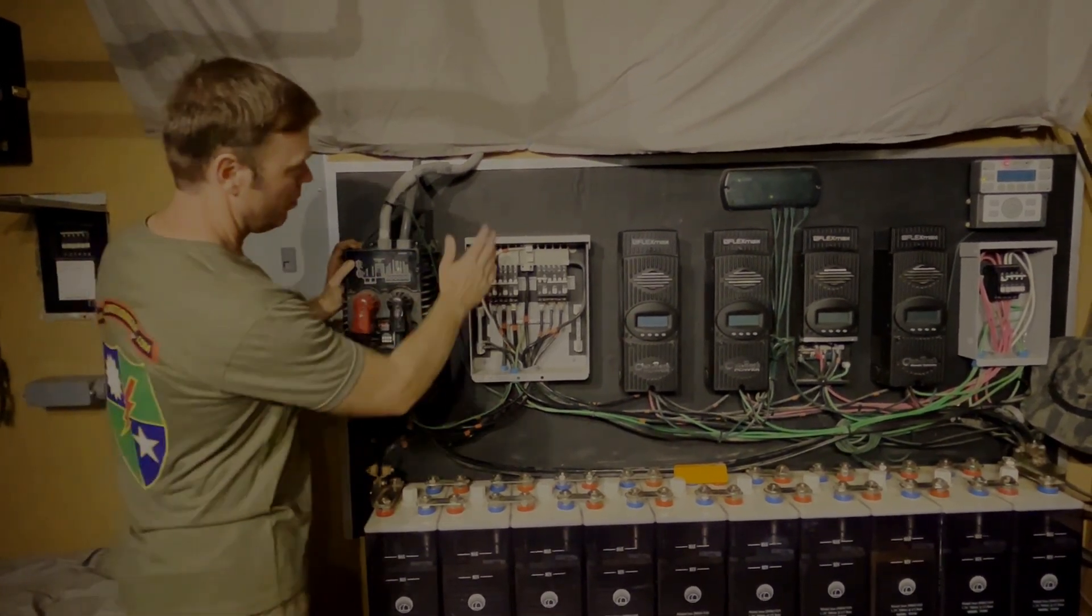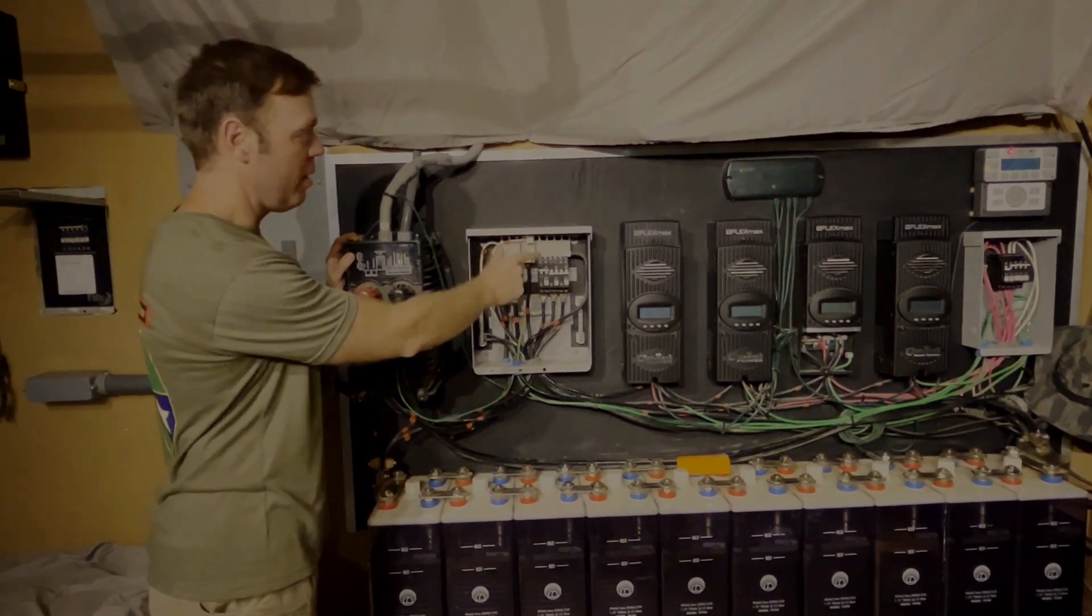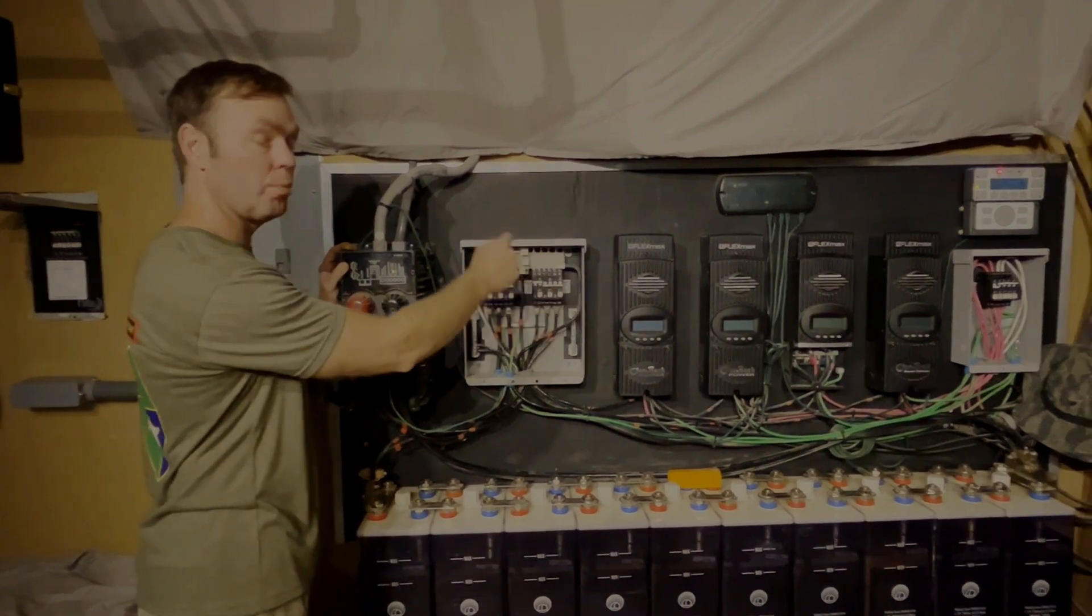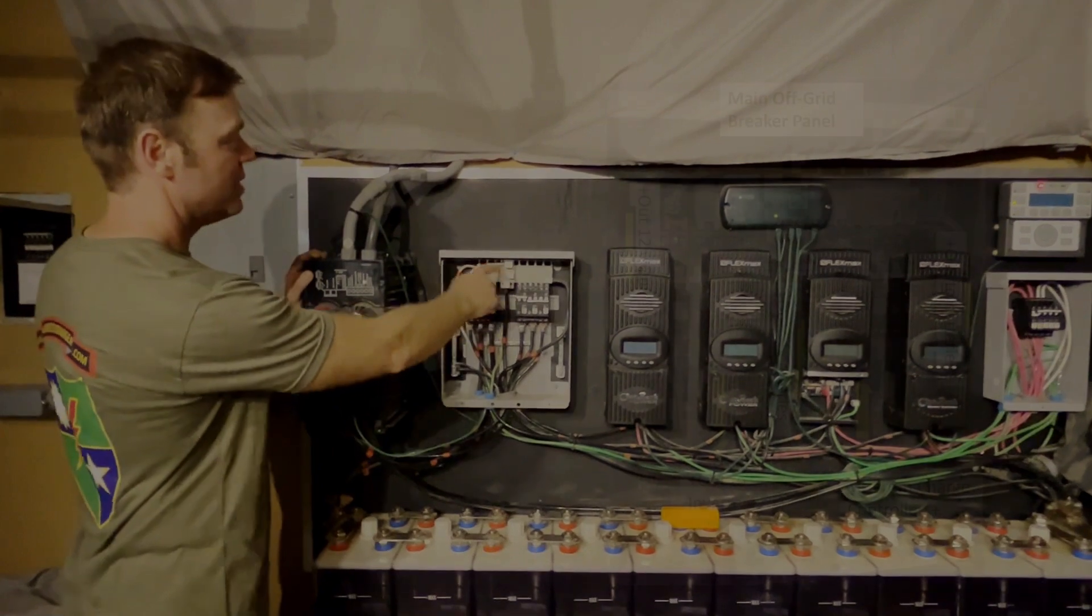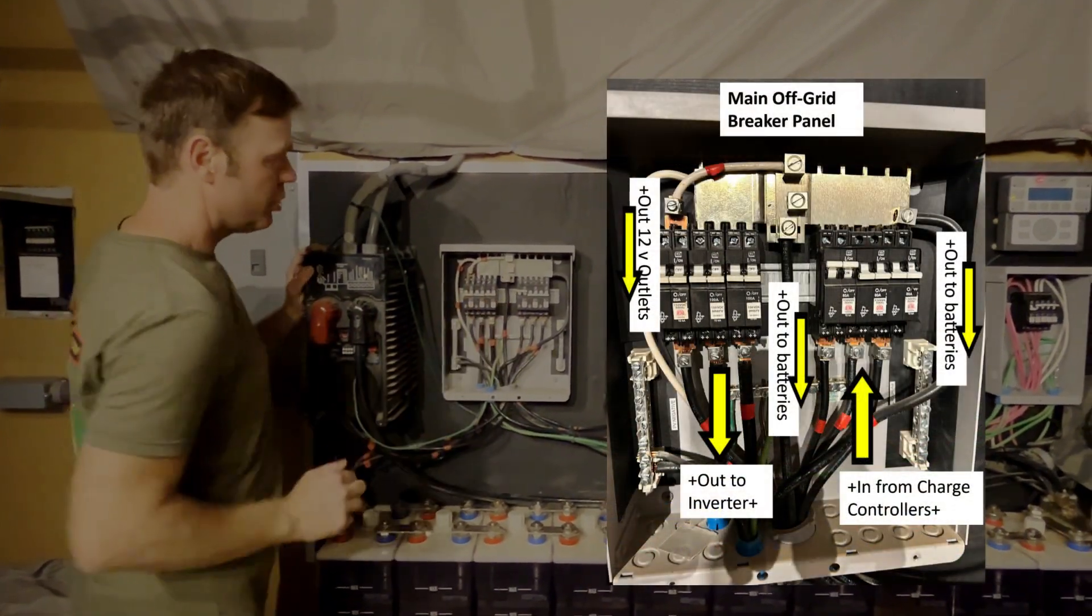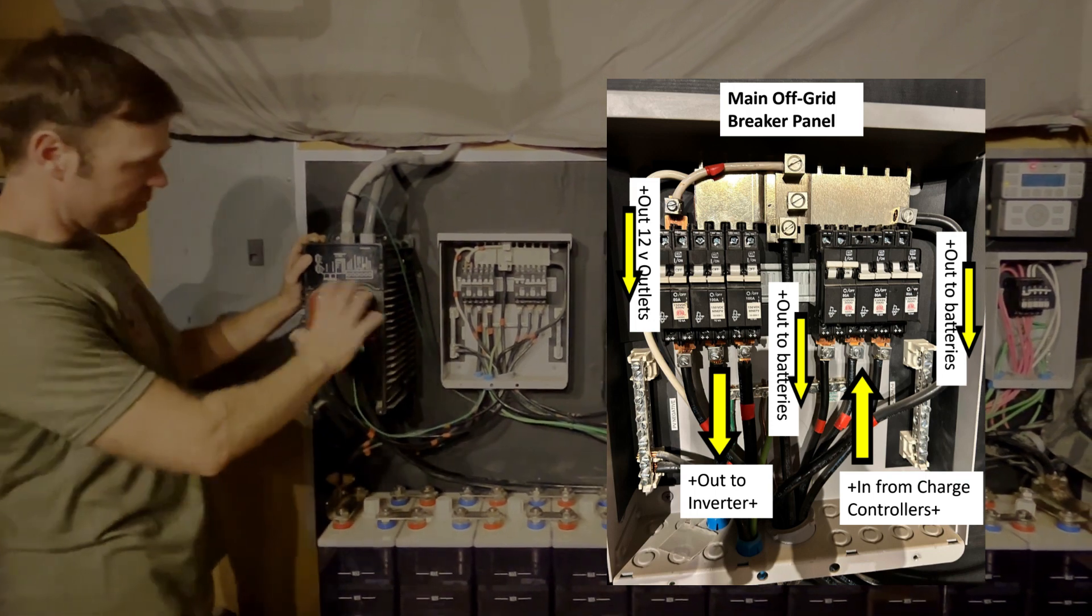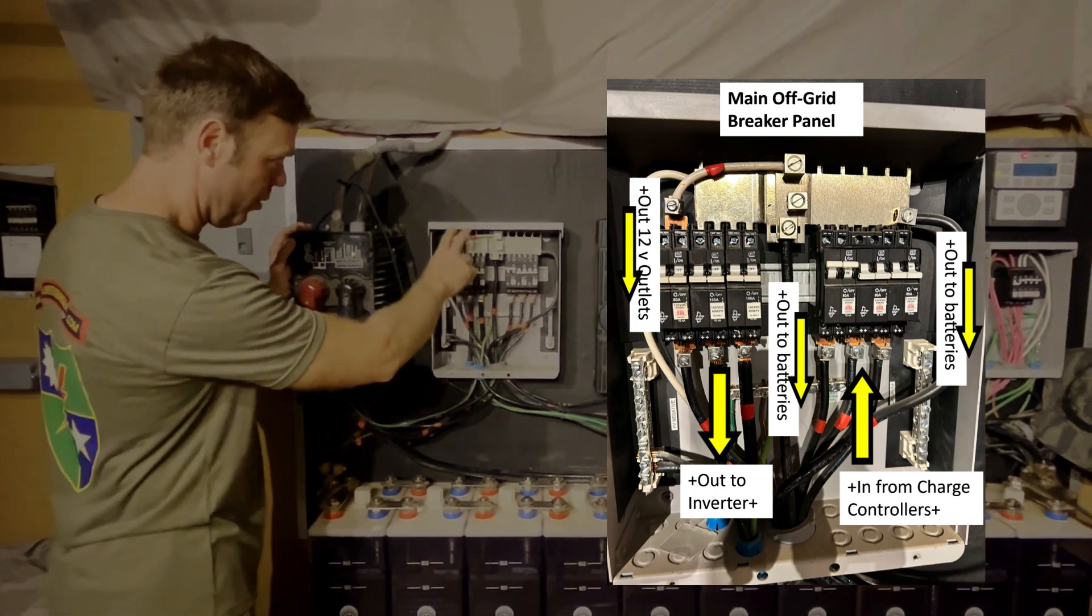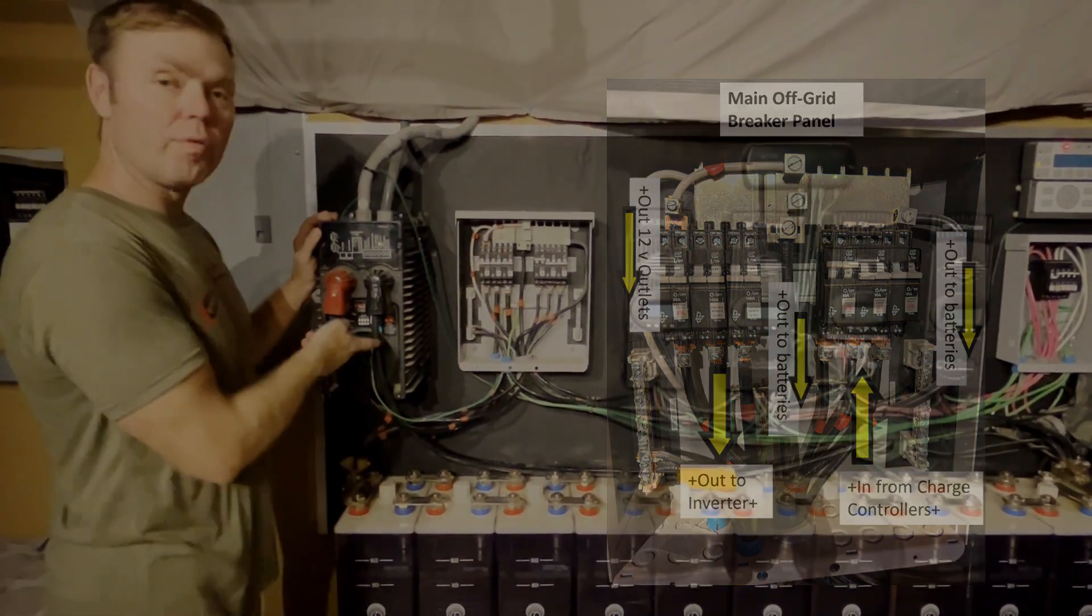At the same time that the power gets combined from your charge controllers, this is your solar power panel directly, gets combined into this big plate up here, that same power also goes to your inverter circuit breakers. I have those turned off now because this is uncovered. But your inverter circuit breakers will then transfer that power over to your inverter.